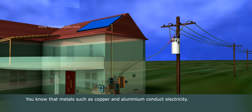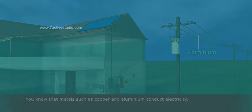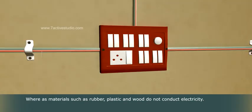You know that metals such as copper and aluminium conduct electricity, whereas materials such as rubber, plastic and wood do not conduct electricity.